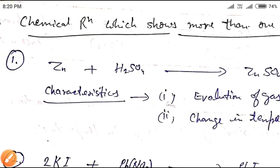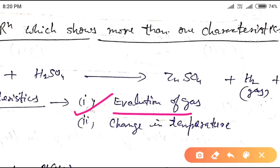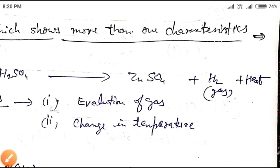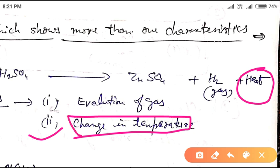This reaction is characterized by two observable features. The first is the evolution of gas — hydrogen gas is formed. The second observable feature is that heat is also produced, resulting in a change in temperature. So there are two observable features shown by this single chemical reaction.